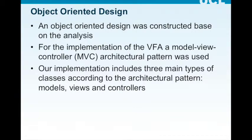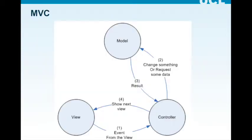Moving on to object-oriented design: a design was constructed based on the prototype implemented. For the implementation, we will use a Model-View-Controller pattern, which divides our prototype software into three separate parts: Model, View, and Controller. The Model defines the behavior of the software as specified by the requirements, independent of the user interface, and directly manages the data, logic, and rules of the application. The View defines the user interface of the application. The Controller sends commands to update the model state.